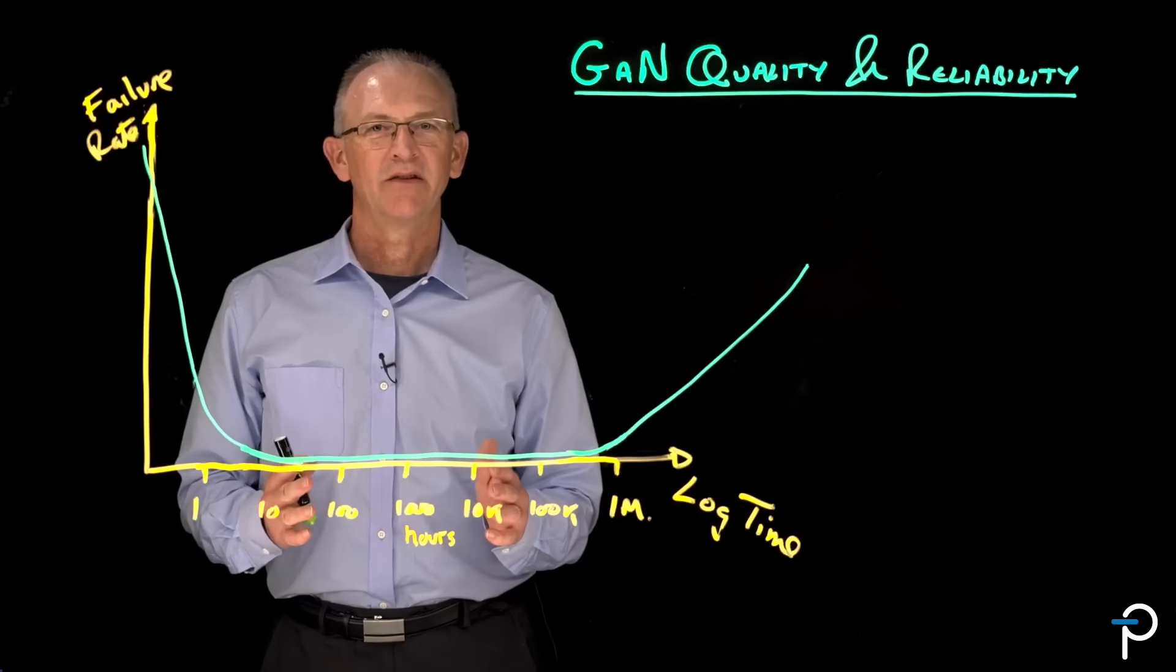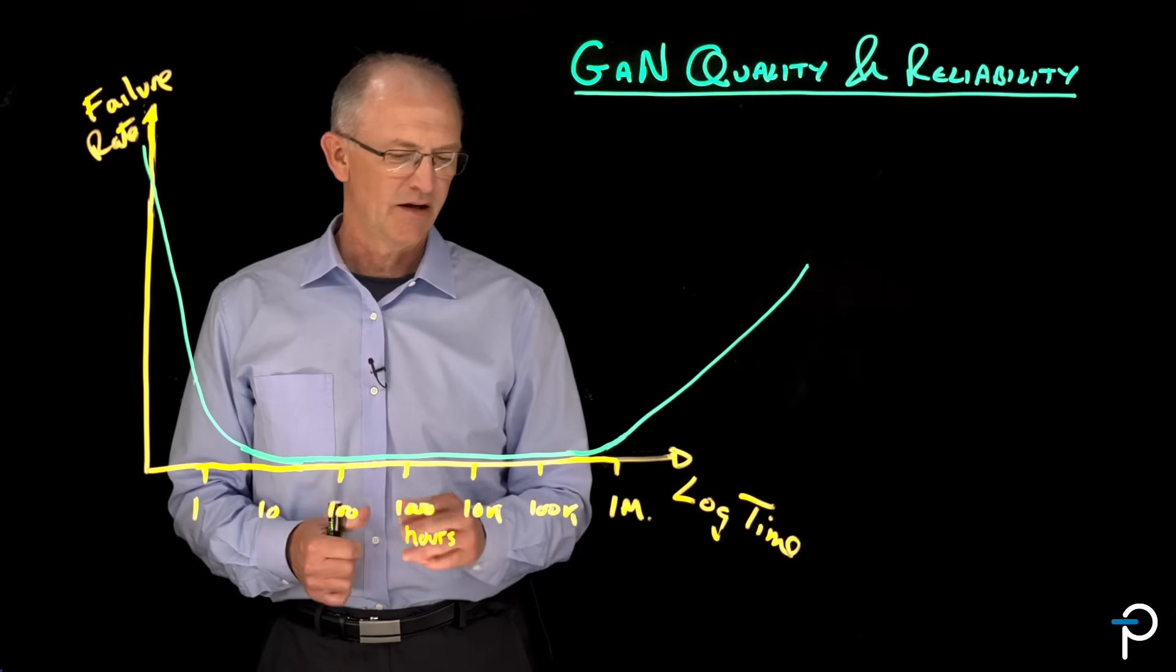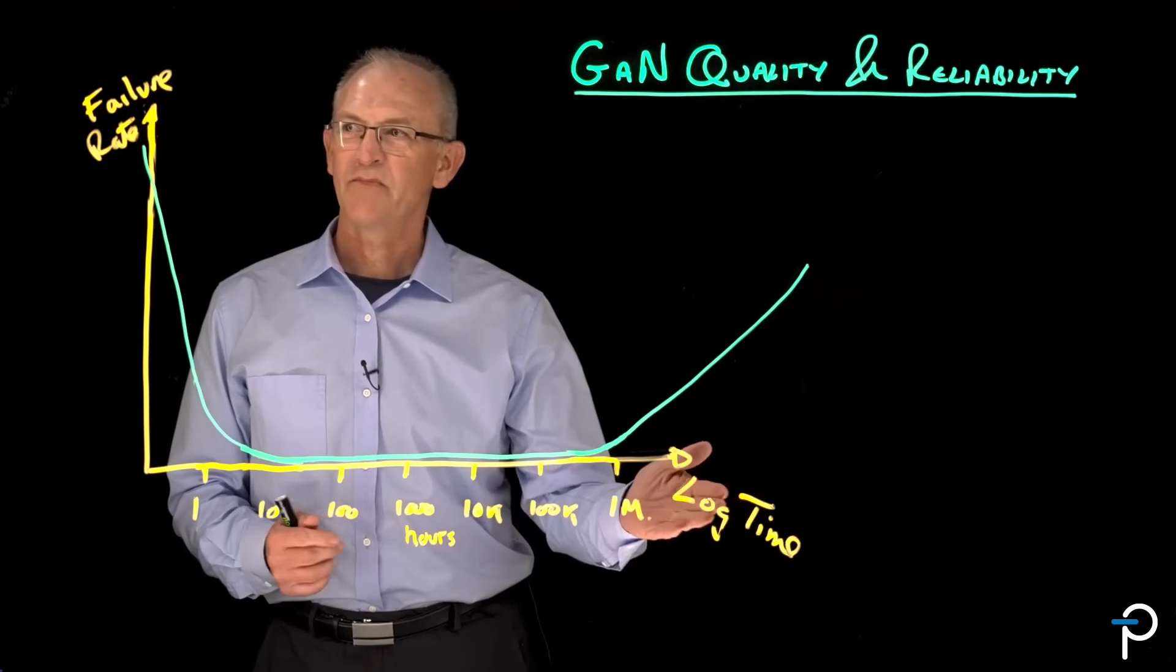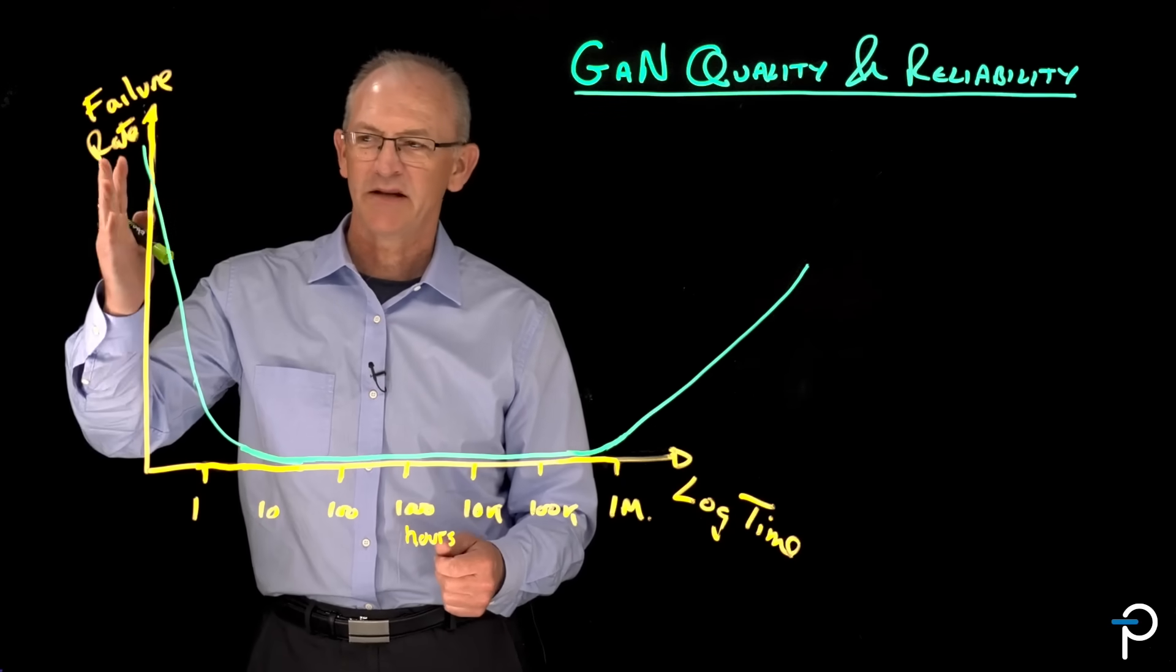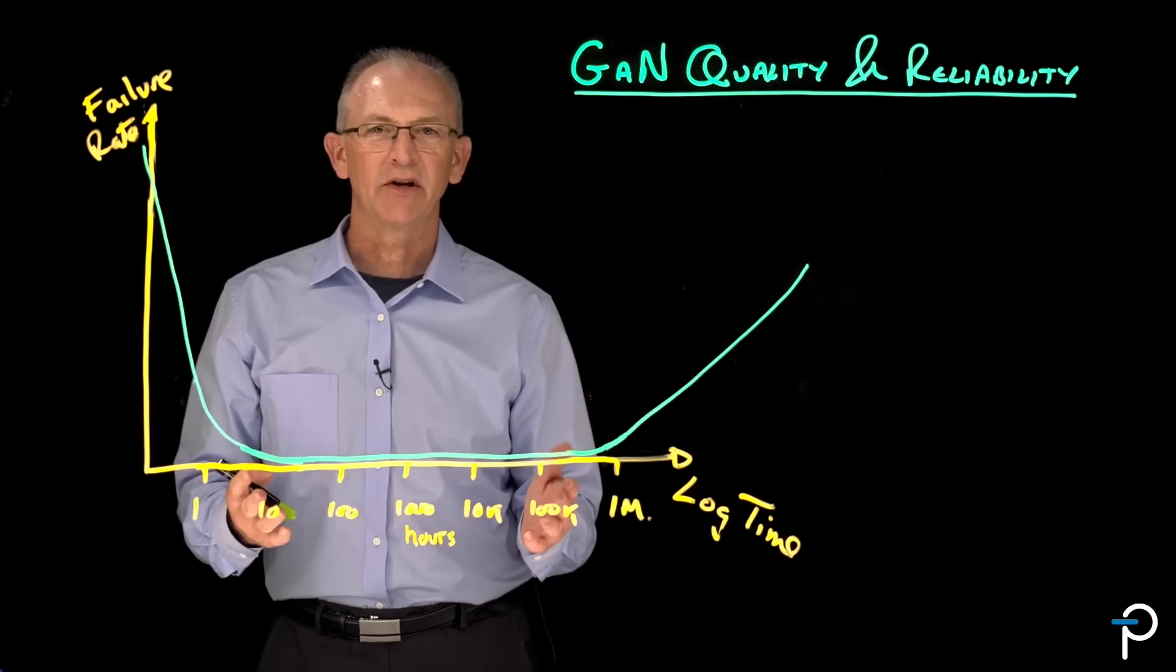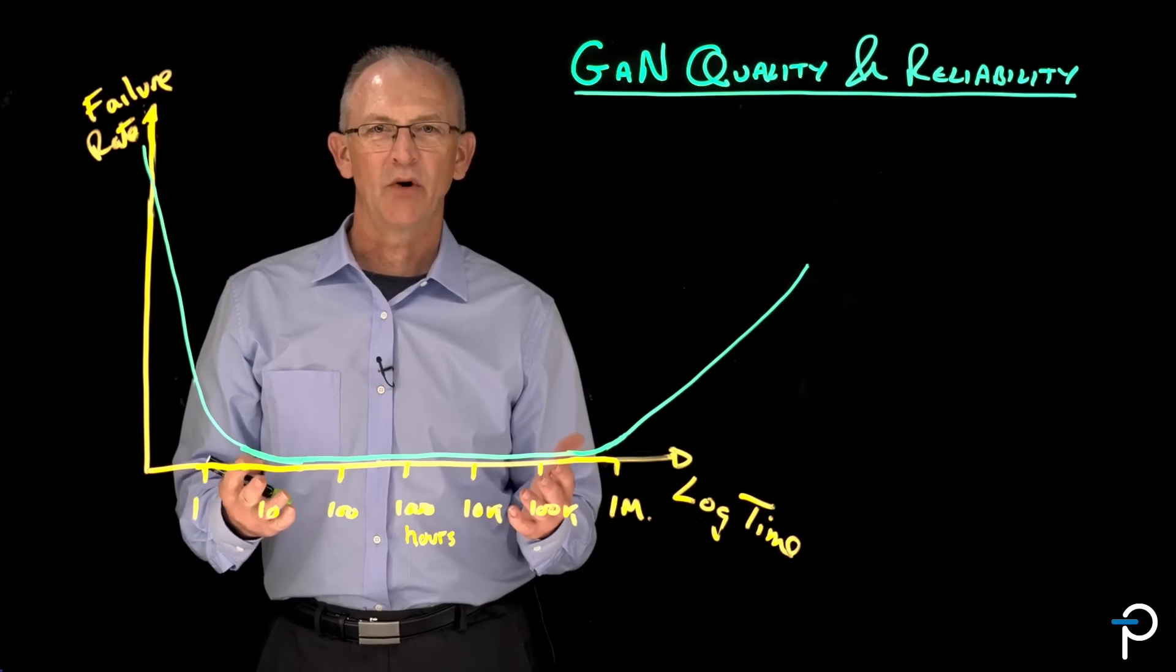So let's take a look at the bathtub curve. On the x-axis here, I have log of time. On the y-axis, failure rate. And then the green line here is the rate of failure of a typical product over time.